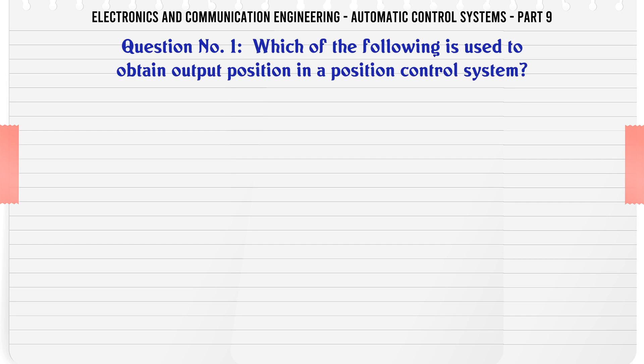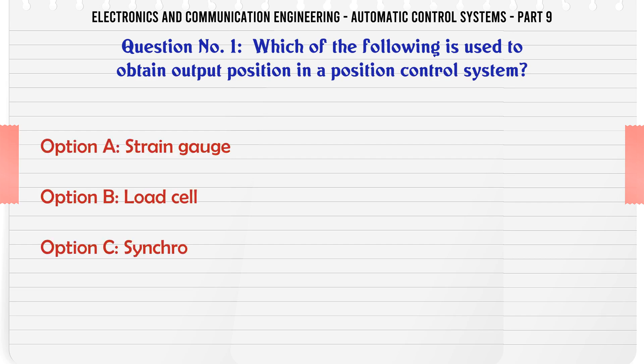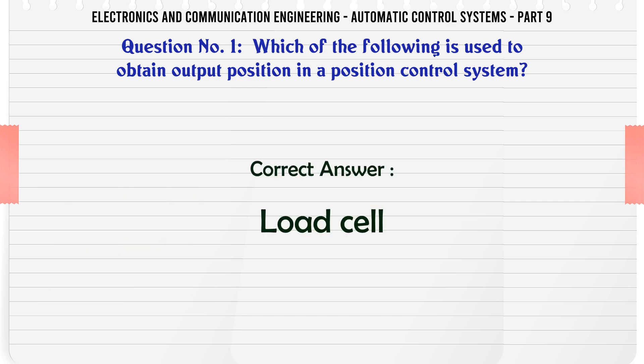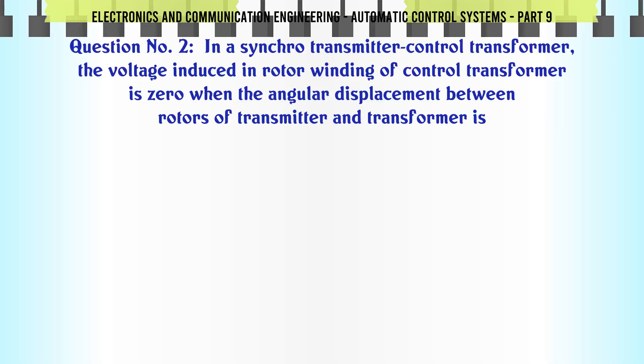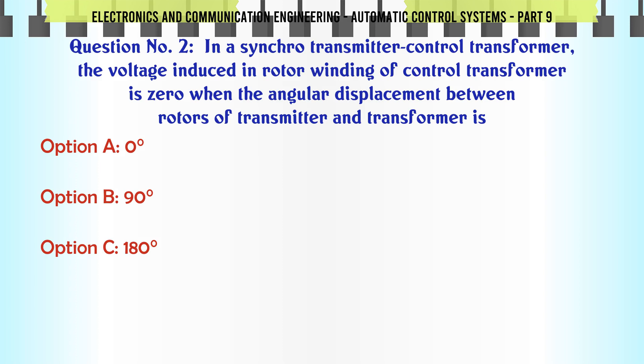Which of the following is used to obtain output position in a position control system? Options: A. Strain gauge, B. Load cell, C. Synchro, D. Thermistor. The correct answer is: Synchro.